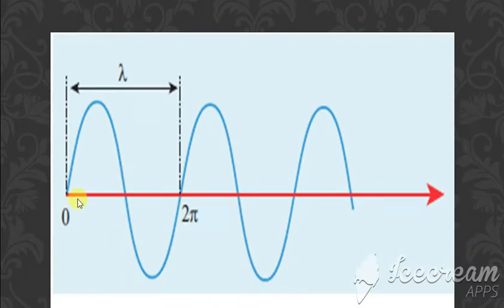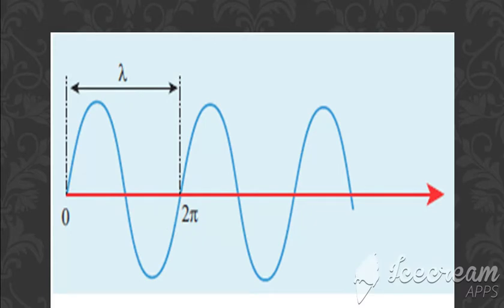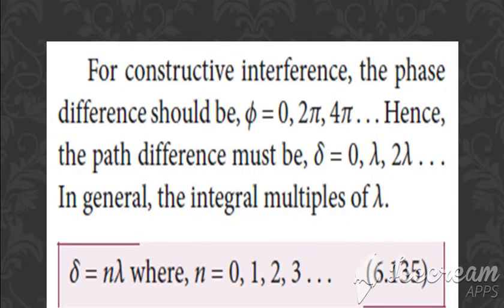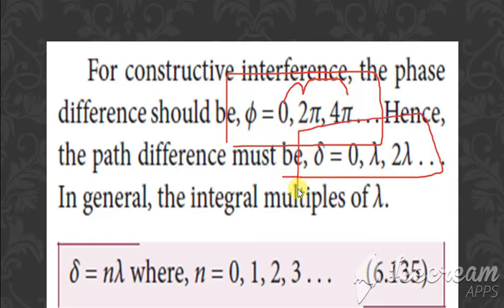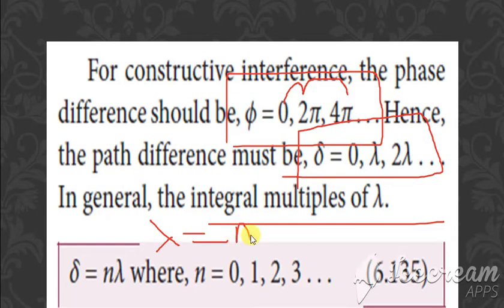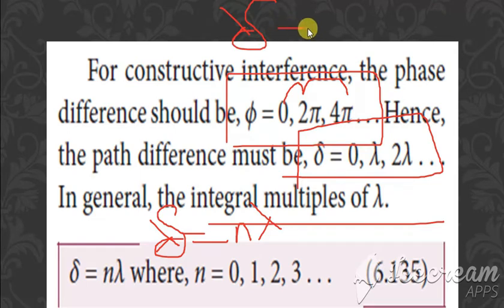Looking at the diagram: from one point to the next, the phase difference is 2π and the path difference is λ. For constructive interference, the phase values are φ = 0, 2π, and 4π, and correspondingly δ = 0, λ, and 2λ — integral multiples of λ. So we can write δ = n × λ, using the equation δ = (λ / 2π) × φ.